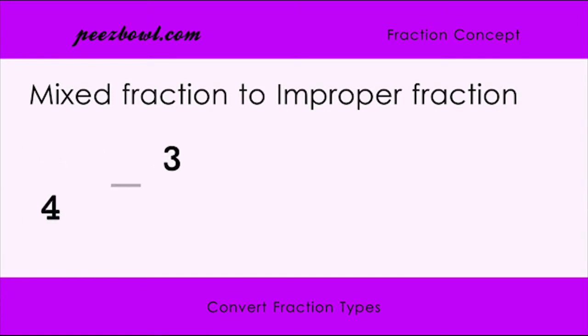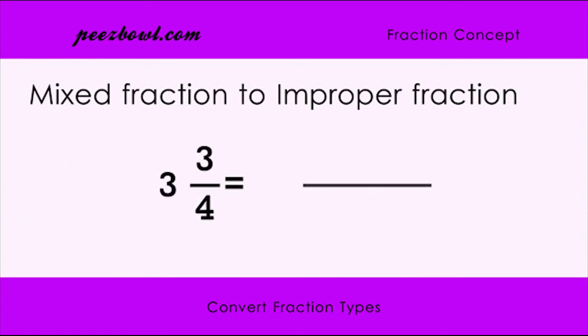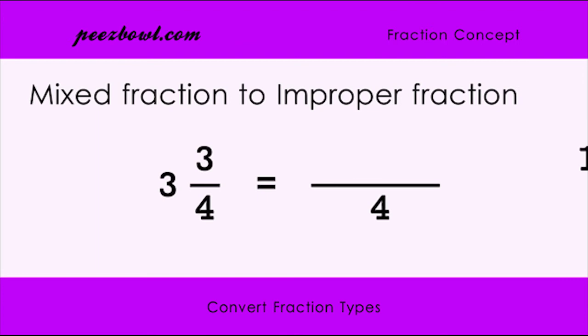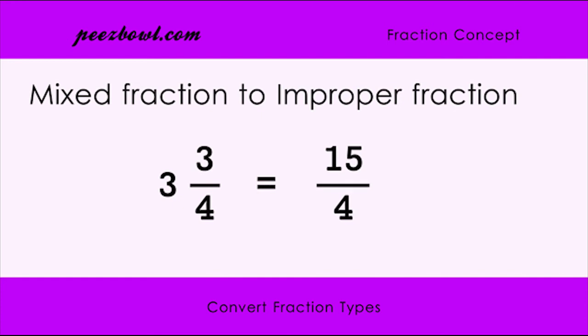Let us convert 3 and 3 upon 4 to an improper fraction. For the numerator, we are multiplying 3 and 4, and then adding 3 with this multiplication. We keep the denominator as 4. The multiplication of 3 and 4 is 12, and adding 12 with 3 becomes 15. So the numerator of the fraction is 15 and the denominator is 4. Hence, the value of 3 and 3 upon 4 is 15 upon 4 in improper fraction format.